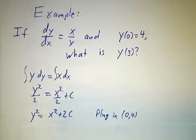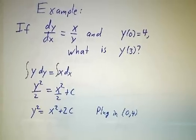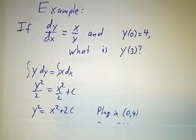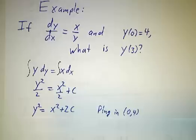And we get y squared over 2 is x squared over 2 plus a constant. In other words, y squared is x squared plus another constant, which is twice the first constant. Okay, that's a hyperbola.